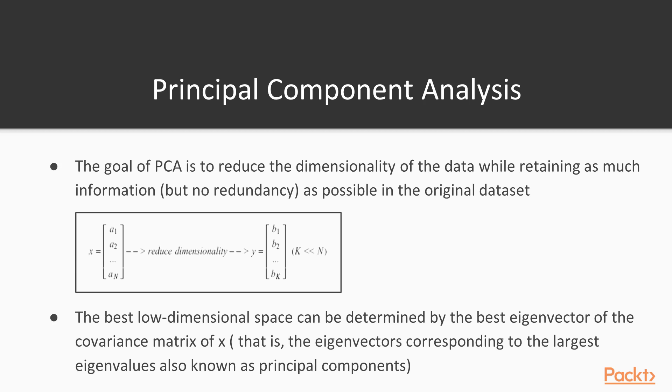Now let's learn about a technique called PCA or principal component analysis. It is very useful for getting out of the curse of dimensionality. The goal of PCA is to reduce the dimensionality of data while retaining as much information as possible in the original dataset.